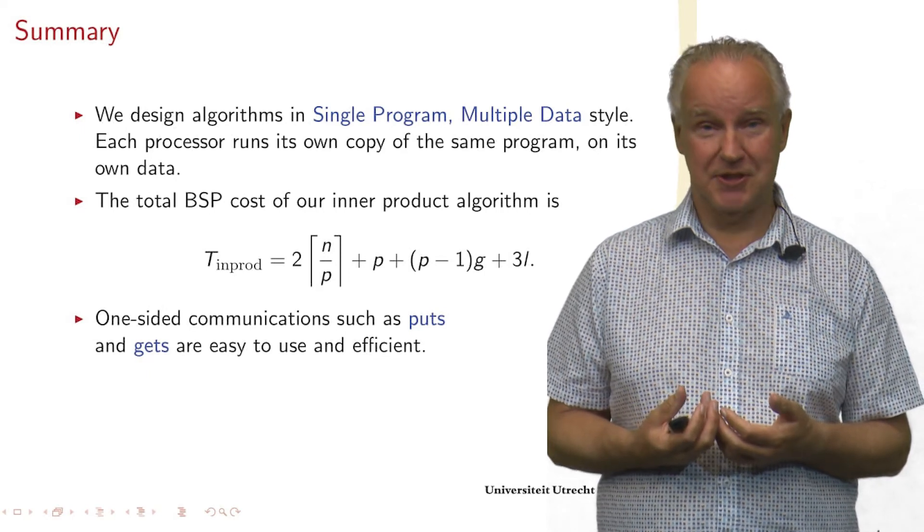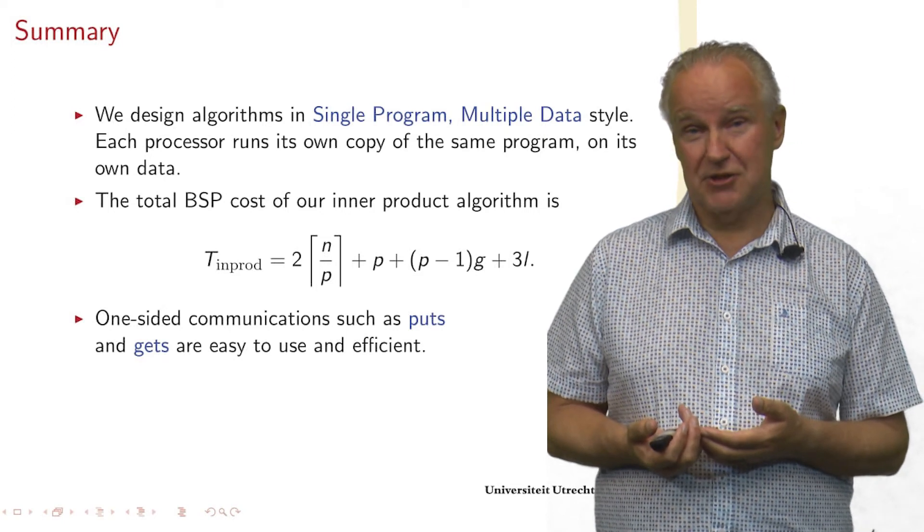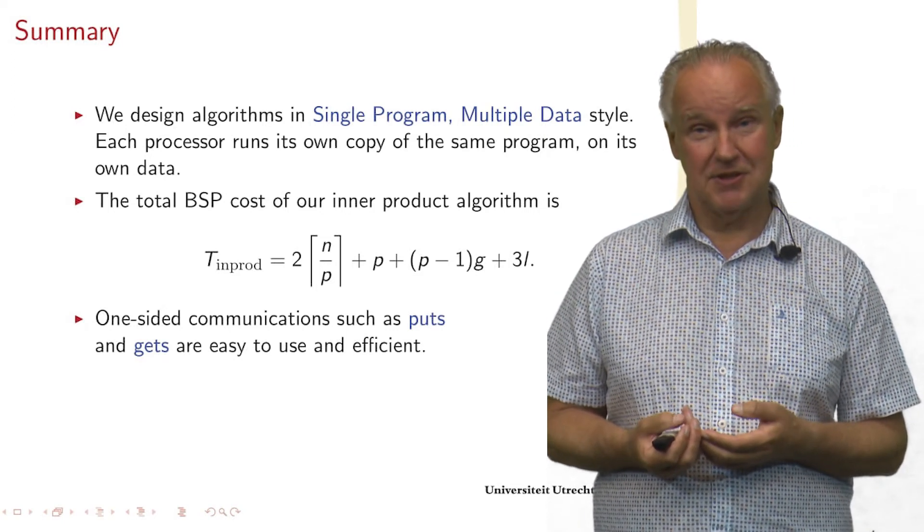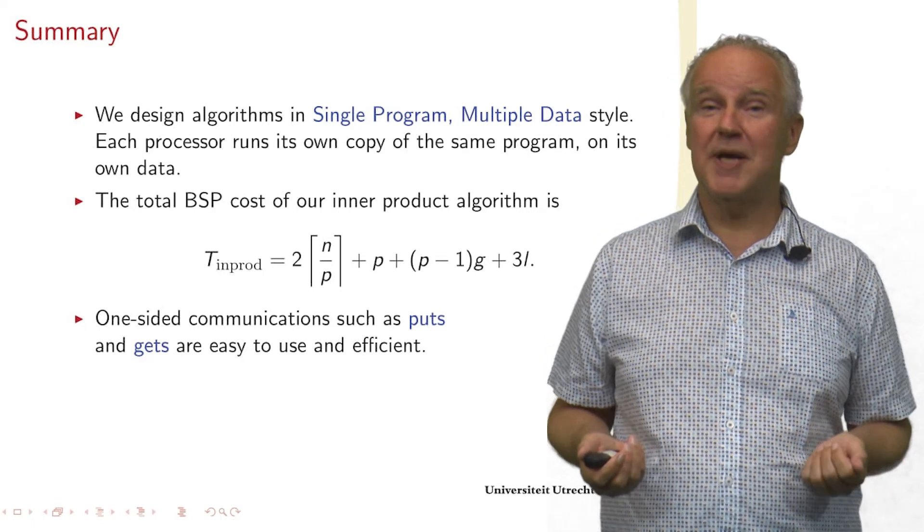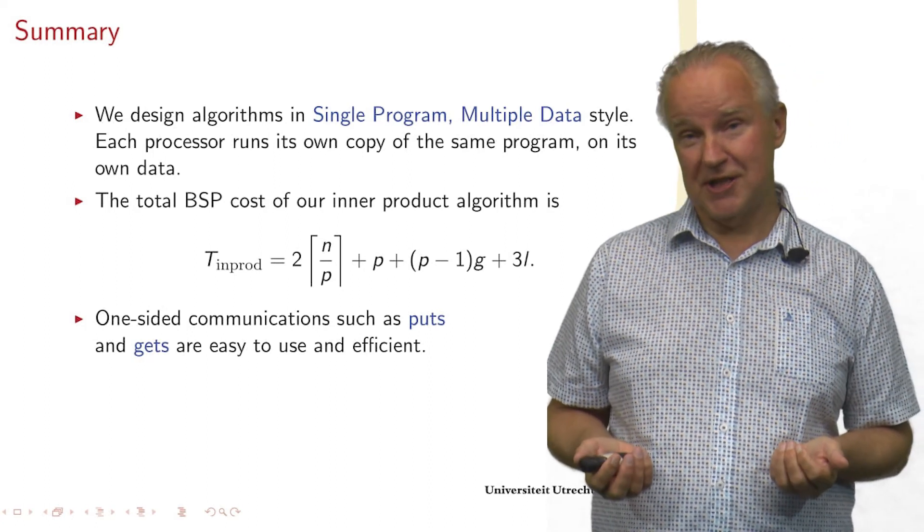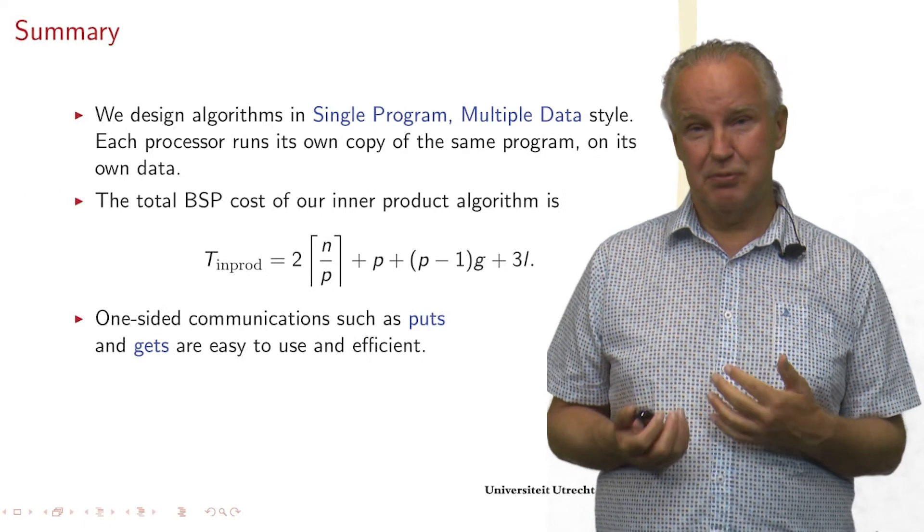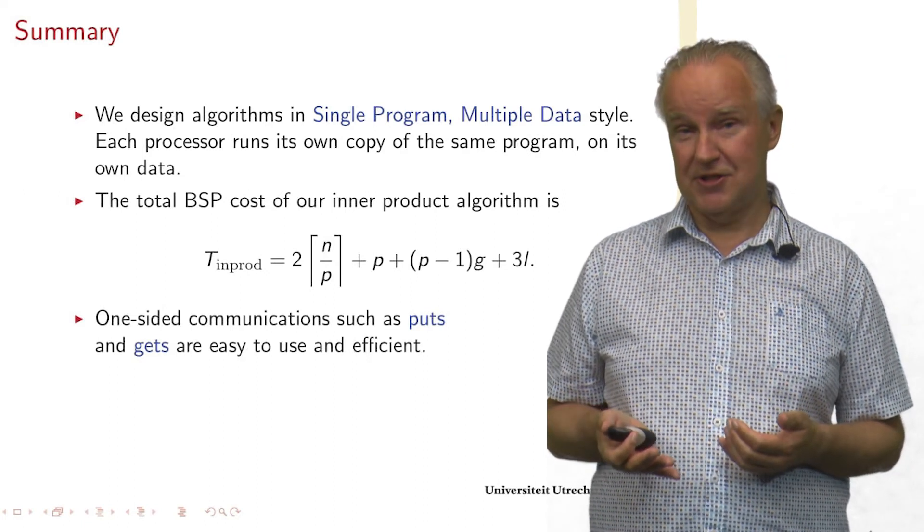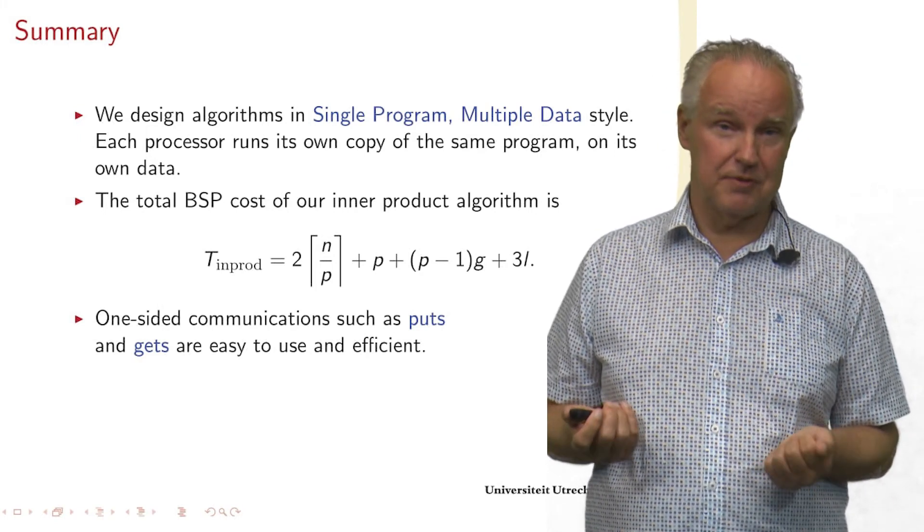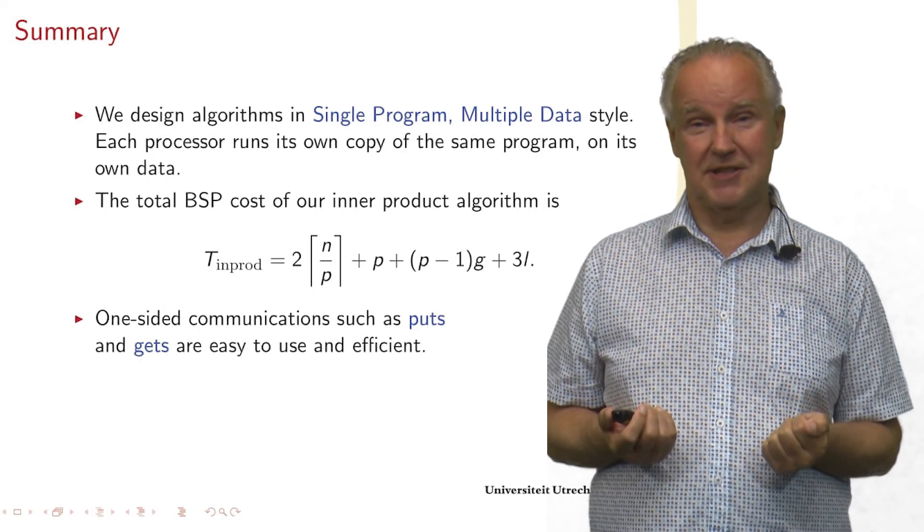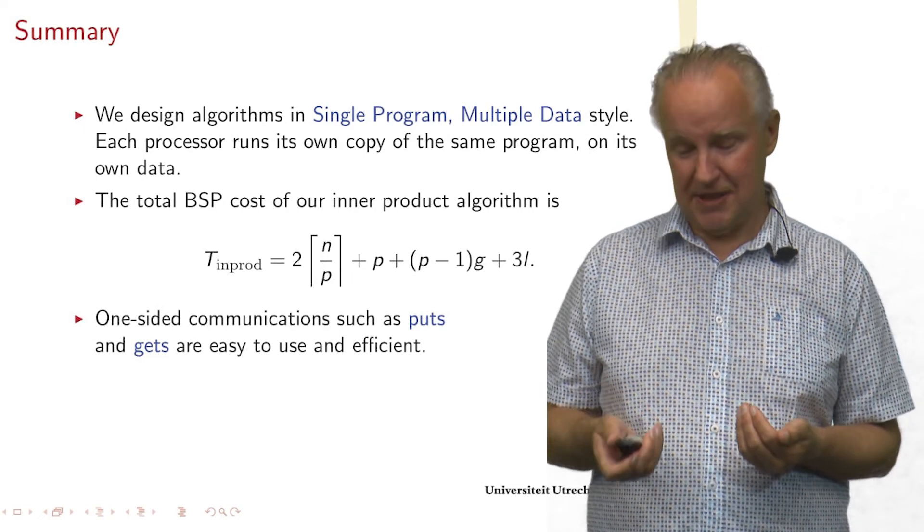We also communicate, and that is the communication of P minus 1 data elements. So P minus 1 times G is the communication cost. And since we have three super steps, the cost of the synchronization is 3L. And we have also seen that puts and gets make program tags easier. Often you only will have to use puts. And an additional benefit is that in implementations in an actual parallel program, they are also very efficient.